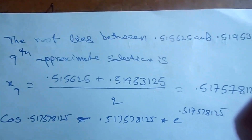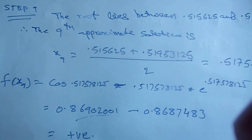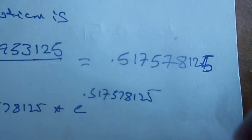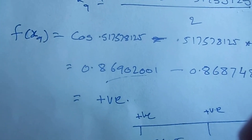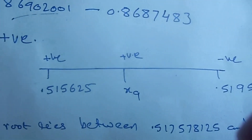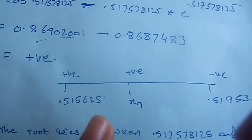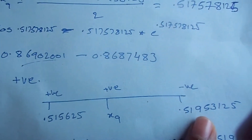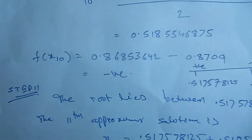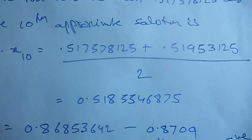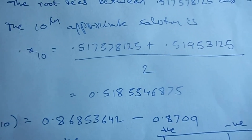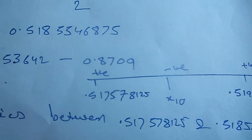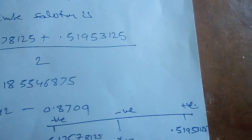Step 9: the root lies between those two values. The ninth approximate solution is the average of 0.515625 and 0.51953125. f(x9) is a positive value. At the starting value it is positive, it is negative, and x9 is positive. So the root lies between x9 and 0.51953125. Step 10: the tenth approximate solution is 0.5185546875. f(x10) is negative, so the root lies between the previous value and this one.